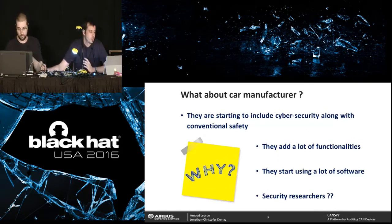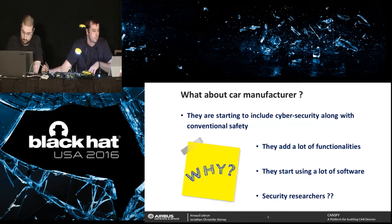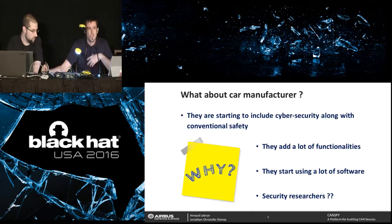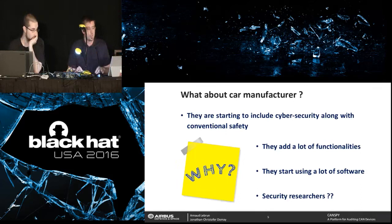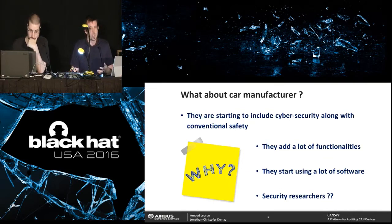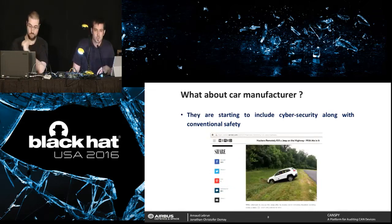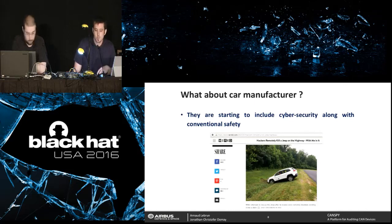So what about car manufacturers? They have been mostly focused on safety for years, and now they also start to focus on security and cybersecurity. They add a lot of functionality to cars — entertainment, navigation, remote connection — increasing the exposure area significantly. They also use more and more software; think about Tesla. This increases the possibility of vulnerabilities. The real driving reason is mostly security researchers publishing findings. When your car can be crashed remotely, it's a big concern for a car manufacturer, so they are starting to really focus on security.